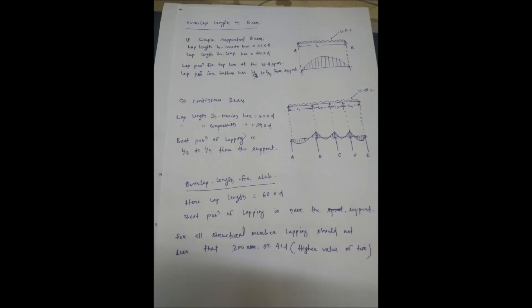bar. Similarly for continuous beam, lap length in tension bar is equal to 50D and lap length in compression bar is equal to 24D. The best position of lapping is L/3 to L/4 from the support, that is one third to one fourth length of the span from the support. This zone is the best zone for lapping of reinforcement in beam.